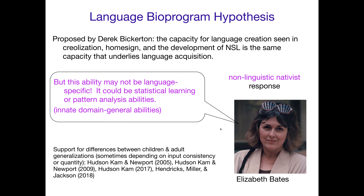Not everybody is a fan of this. For non-linguistic nativists — those who do not believe in innate knowledge — like Elizabeth Bates, they did not believe in innate knowledge that's specifically linguistic. They say they're totally on board that innate knowledge is giving these kids a head start, but it may be innate stuff that's not specific to language. It could be certain types of statistical learning abilities, which are domain-general — abilities you can use across cognitive domains.